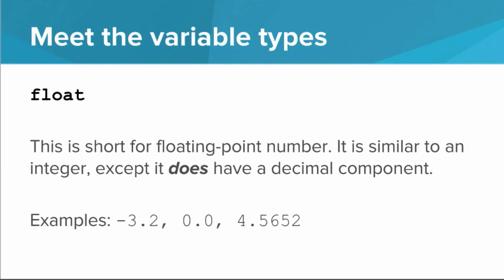Another type that we haven't seen yet, but we will in future lessons, is float. Float is short for floating point number, and this is basically like an integer, except it does have a decimal component. So negative 3.2, 0.0, or 4.5652 are all examples of floats.